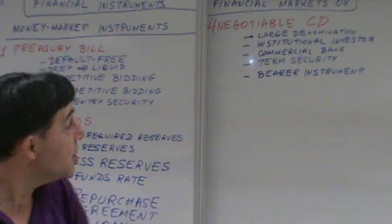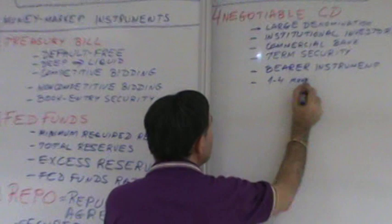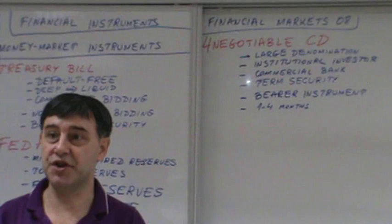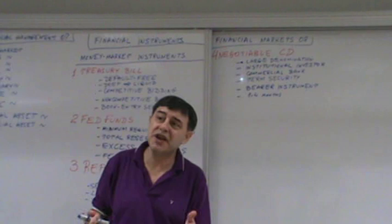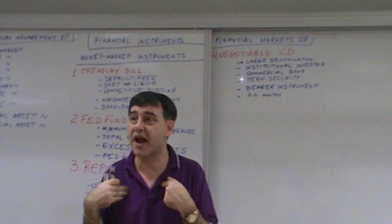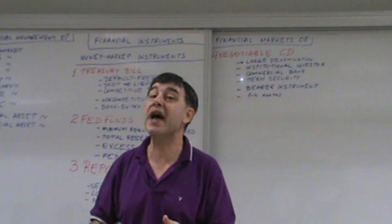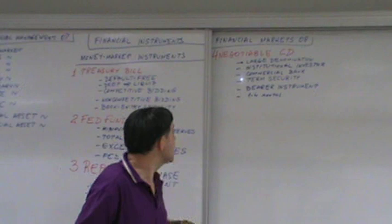Usually, reading from the book, one to four months is the most common maturity. They'll have a one-month CD, two-month, three-month, four-month — these are the most common. In my home country, Bulgaria, we very commonly have a six-month CD and also a 12-month CD. It is also called a term security.